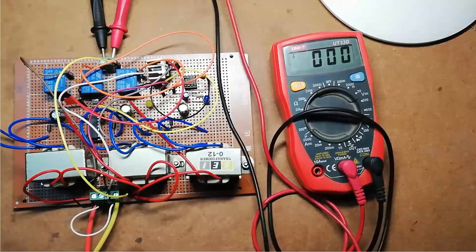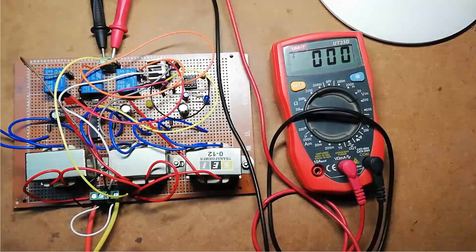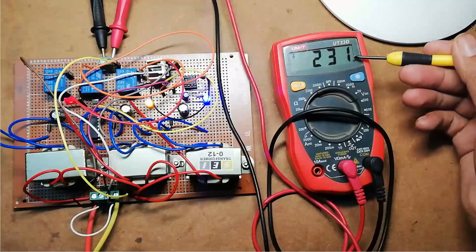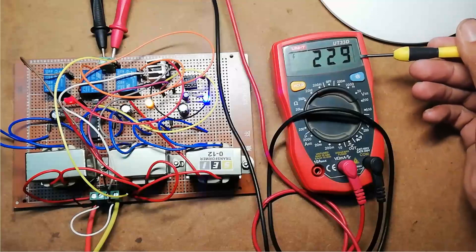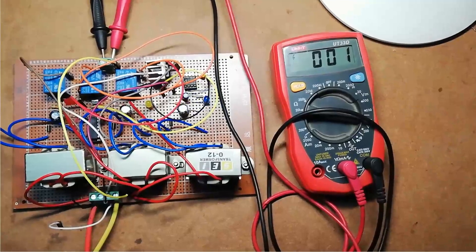Now let's see the output of the circuit when all the main supply, i.e. R Y B phase is available. As you can see here, 230 volt is appear at this multimeter.